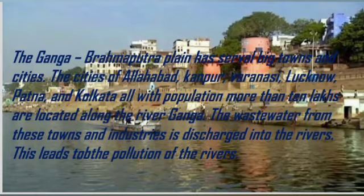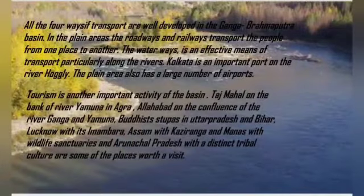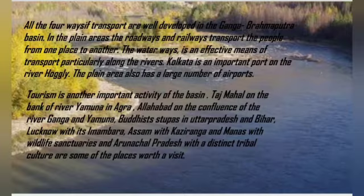The Ganga-Brahmaputra Plain has several big towns and cities. The cities of Allahabad, Kanpur, Varanasi, Lucknow, Patna, and Kolkata all have populations of more than 10 lakhs and are located on the river Ganga. The wastewater from these towns and industries is discharged into the river, leading to pollution. All four modes of transport are well developed in the Ganga-Brahmaputra Basin. In the plain areas, roadways and railways transport people from one place to another. Waterways are an effective means of transport, particularly along the river. Kolkata is an important port on the river Hooghly.